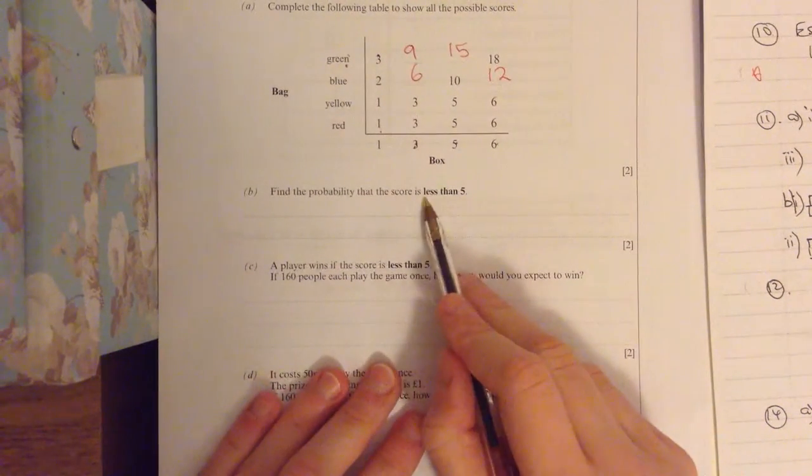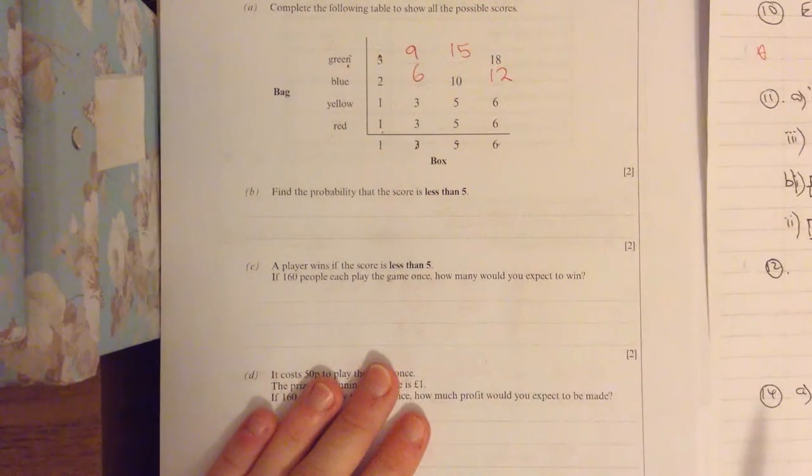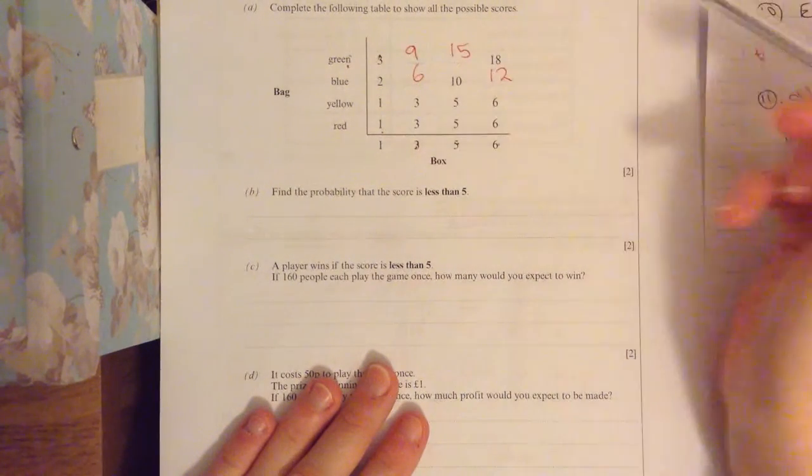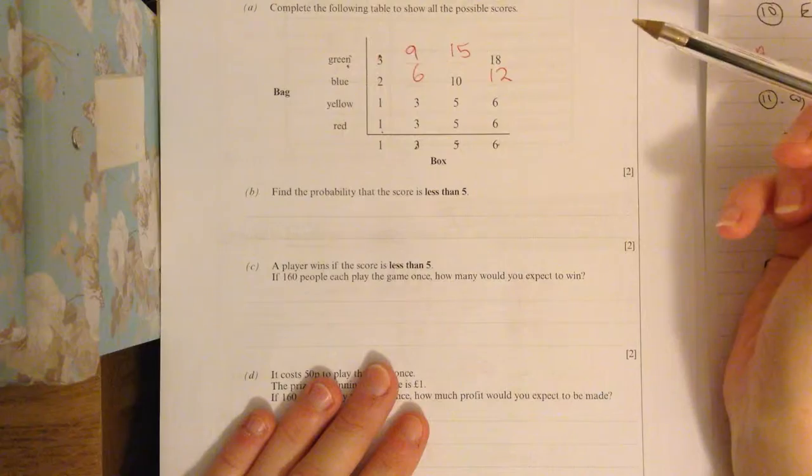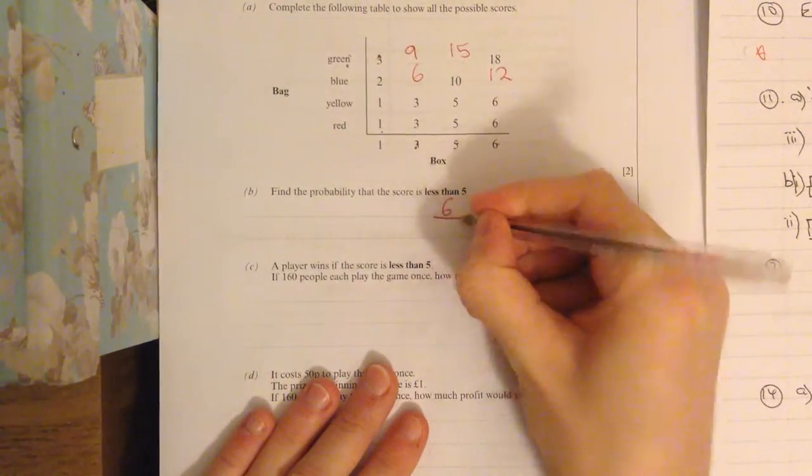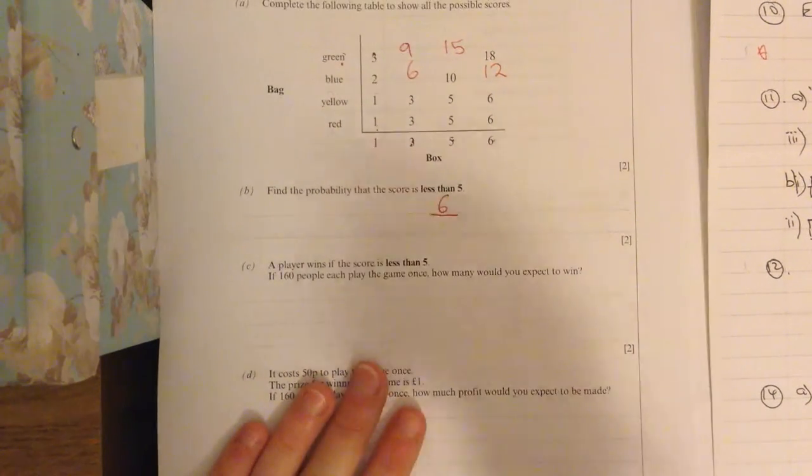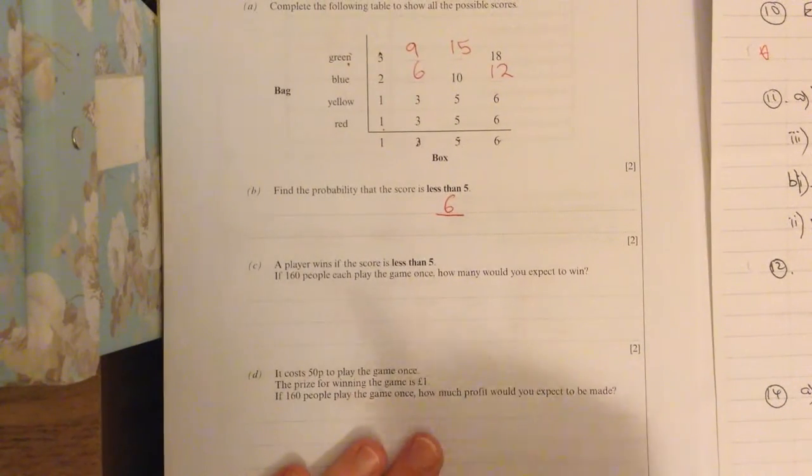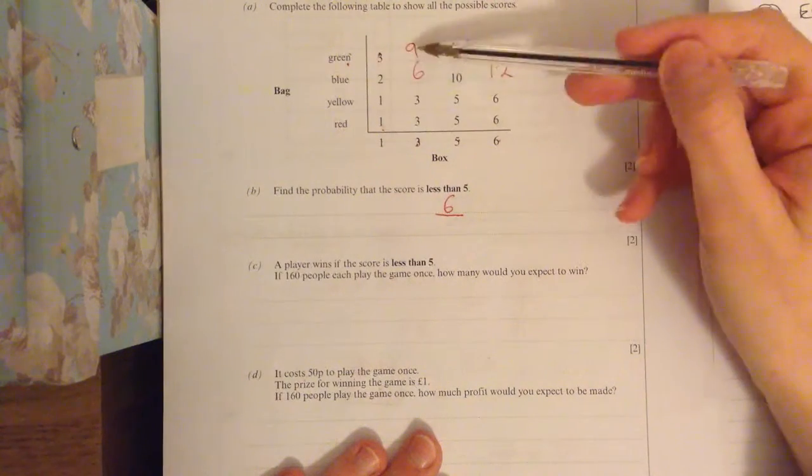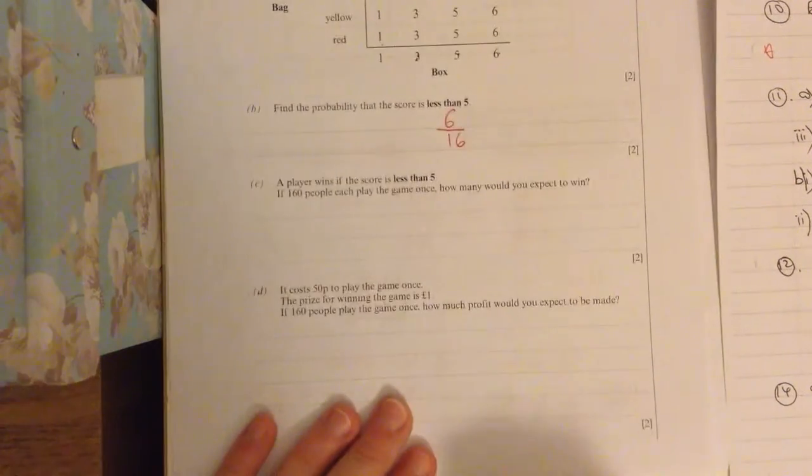Find the probability that less than five. So we look at our sample space and we decide how many scores are less than five. So we've got one, two, three, four, five, six. So six scores are less than five. And remember, probability is always written as a fraction or percentage or decimal, tends to be fractions. And it can't be greater than one. So to write it as a fraction. So six out of how many choices in total, four, eight, twelve, sixteen. So six out of sixteen.